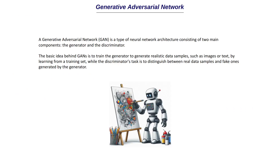So this is the definition of a GAN. A generative adversarial network or a GAN is a type of neural network architecture consisting of two main components: the generator and the discriminator. The basic idea behind GANs is to train the generator to generate realistic data samples such as images or text.